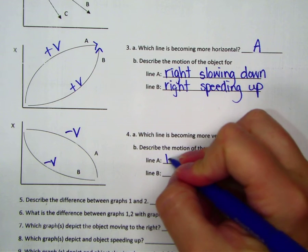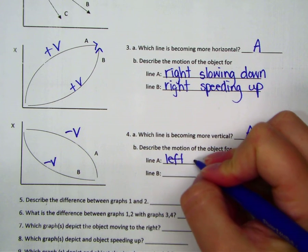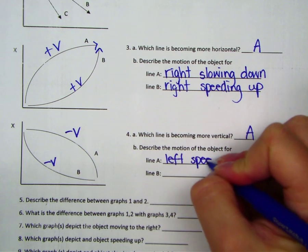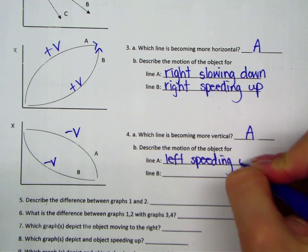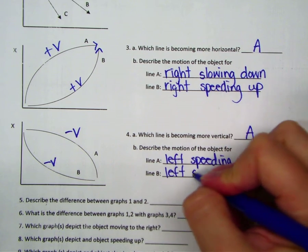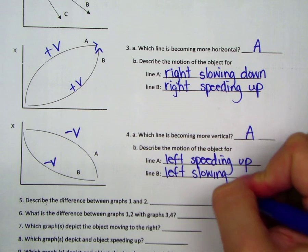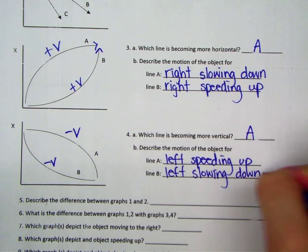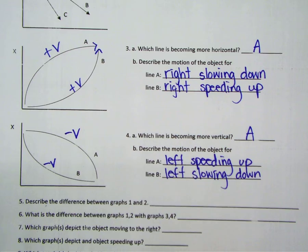So that means it's moving to the left and speeding up. Where line B is moving to the left and slowing down. So that's your basics here.